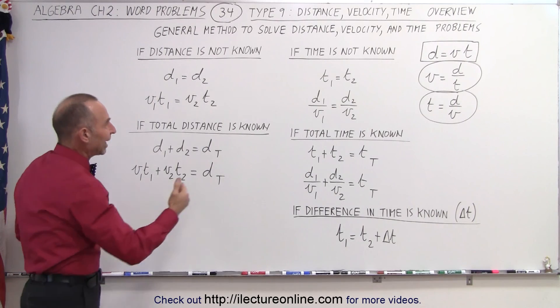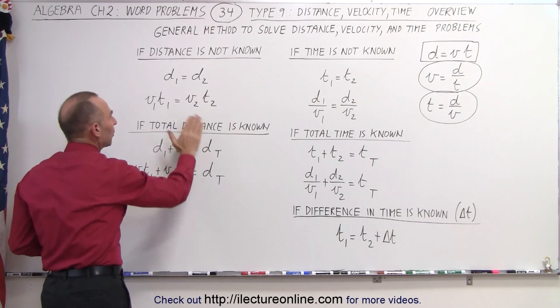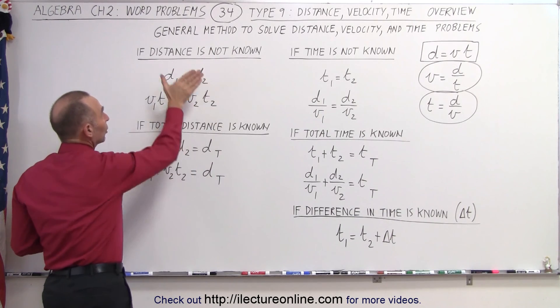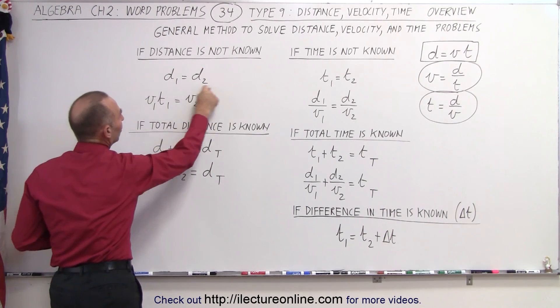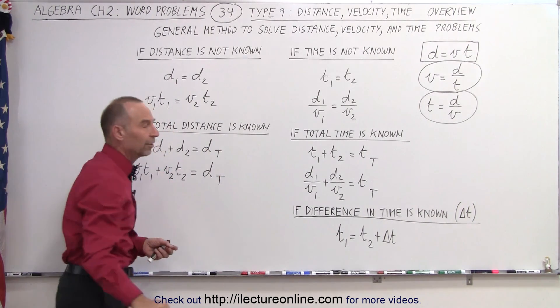So again, it's all about finding an equation, one of those three equations, in such a way that we can eliminate what is not known. We don't know the distance, so therefore we change it to an equation like this, or we know the total distance, and we can write the equation like this.